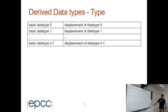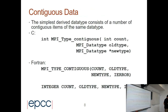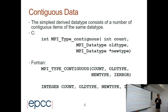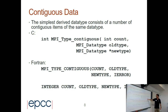This is for a structure where we have the basic data types and the displacement of each. The easiest one is a vector of continuous elements. To define that in C, we specify the count — for example, four integers — we use MPI int as the old type, and the new data type could be called vector4 or another name.